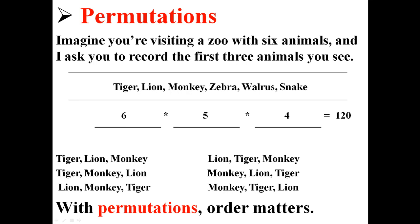When you're doing permutations, order matters. For these six circumstances where you see the same three animals, they count as different circumstances because the order is different.